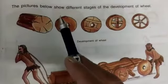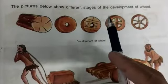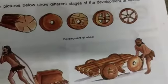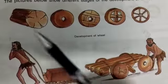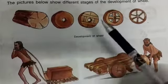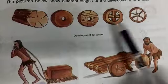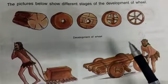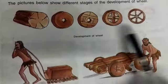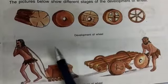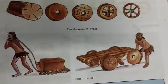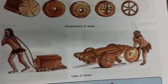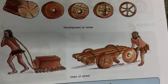Now I will show you this picture. The picture below shows different stages of the development of the wheel — starting from the log, then a modified block with a hole in it. You can see different stages here. Presently we use rubber tires, and many tires are tubeless, though some still use air-filled tubes.